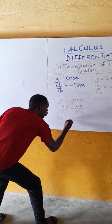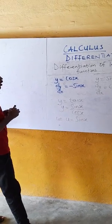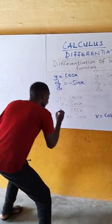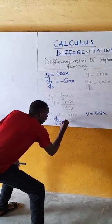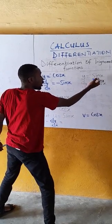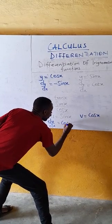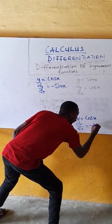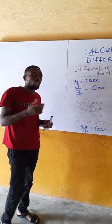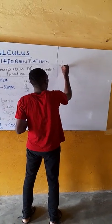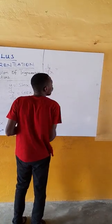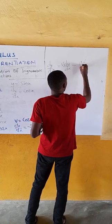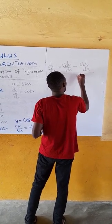We let u equal sin x and v equal cos x. So du/ds equals cos x — the differential of sin is cos. And dv/ds equals negative sin x — the differential of cos is negative sin. The quotient rule states that dy/ds equals (v·du/ds minus u·dv/ds) all over v squared.